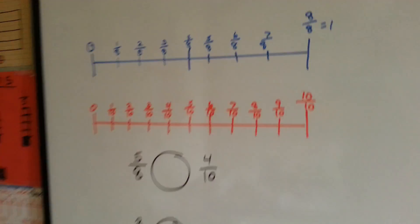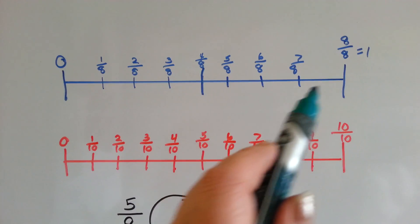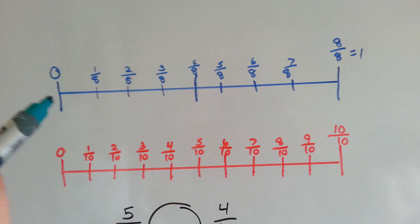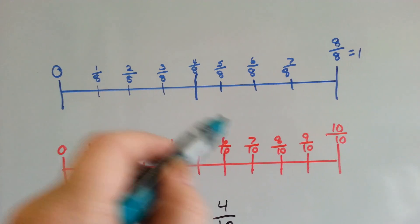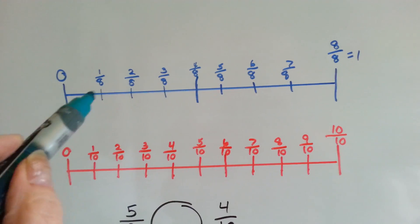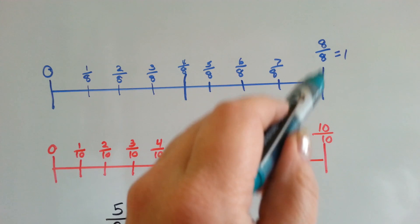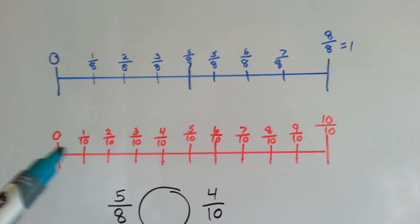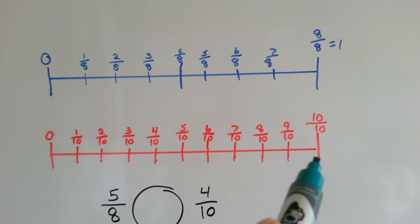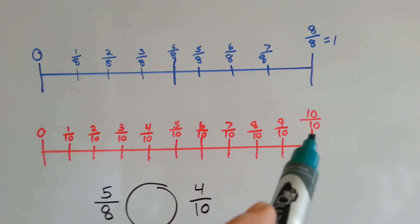Let's compare some fractions on a number line. We've got two number lines here. This one is broken up into eighths — this is 0, this is halfway, and this is the 1. It's 8 eighths; it's split into 8 parts, and when you get to the end, you've got all 8 parts. This one is split into tenths. When you get to the end, you've gotten to all 10 parts of the 10 that it's split into. 10 tenths is equal to 1.